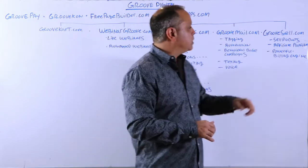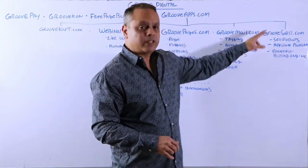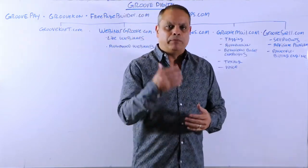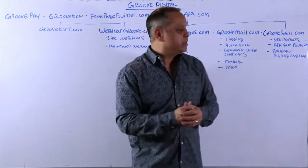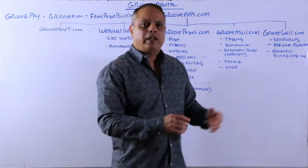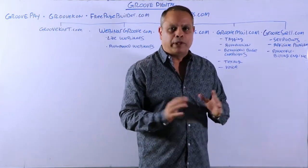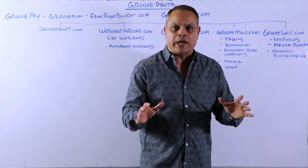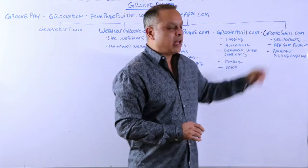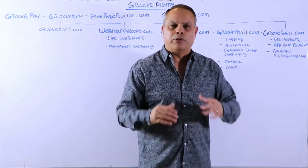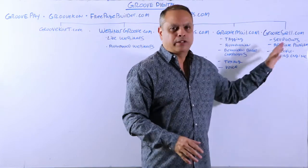Also currently in development is GrooveSell. GrooveSell is going to allow you to sell your products with multiple price points — $497, two payments of $397, that type of stuff. It'll have free trials, recurring billing — basically a very powerful billing engine. One-click upsells, anything you can imagine to sell digital products. And it's going to have a world-class affiliate program so you can have an army of affiliates selling your products. Price to be determined.